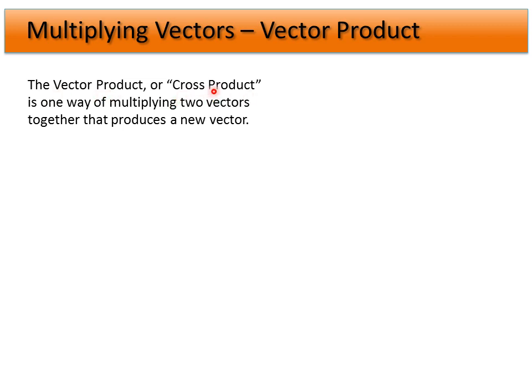The vector product, we sometimes call it the cross product because of the symbol we use, but the major difference of a vector product is that we're going to actually get a new vector out at the end. So a vector crossed into a second vector is going to give us a new vector, a third vector.